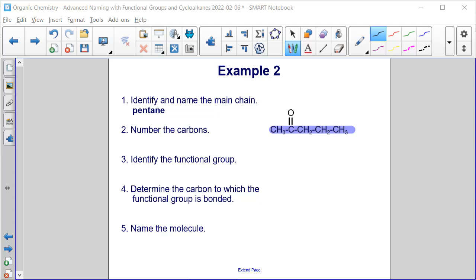Once we identify our main chain, we need to number the carbons. And we're going to start at the end closest to the double bond oxygen. So one, two, three, four, five, from left to right.